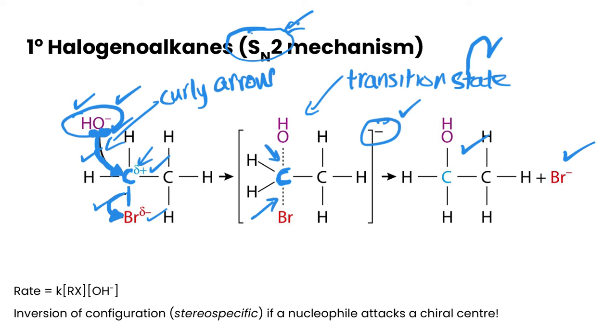And both the nucleophile, so the OH minus here, and the halogen and oalkane take part in that rate determining step. So if we were to write out an equation for its rate, its rate would be dependent on both the halogen and oalkane and the nucleophile. And we'll come back to rates in a separate video, but this is just a little bit of an introduction.